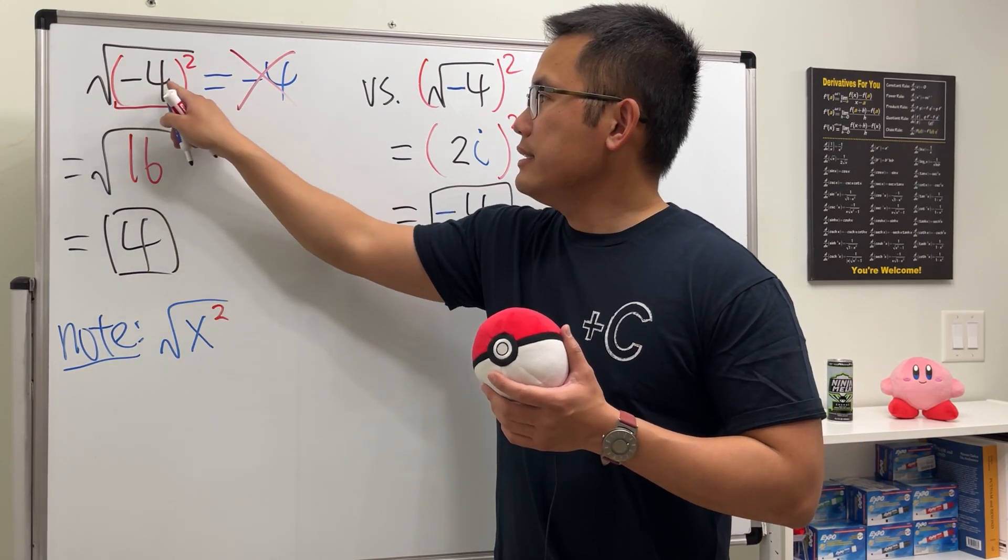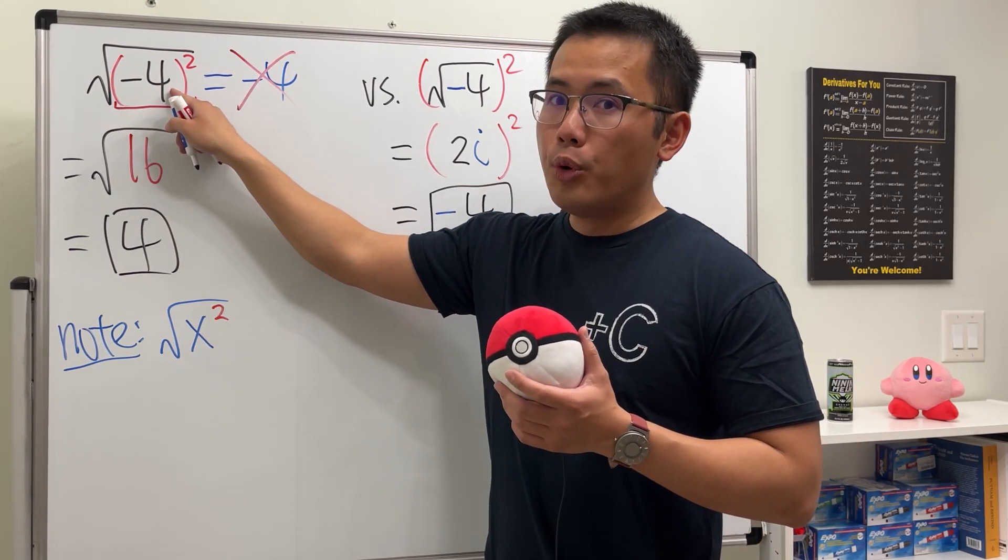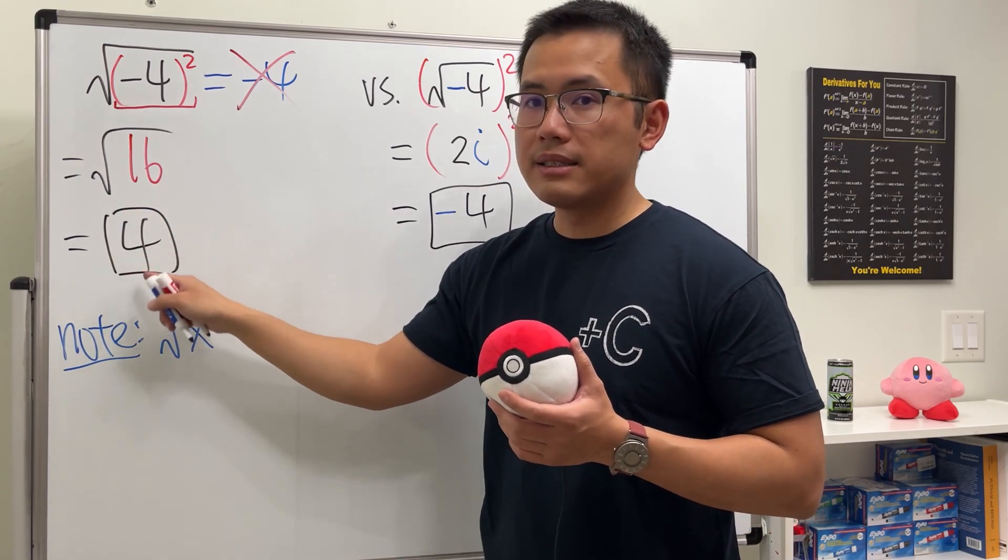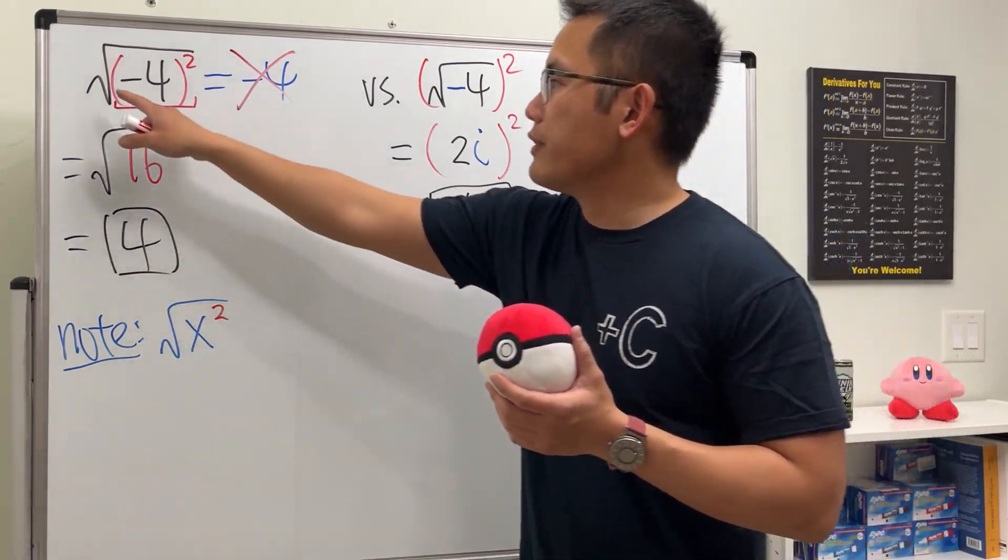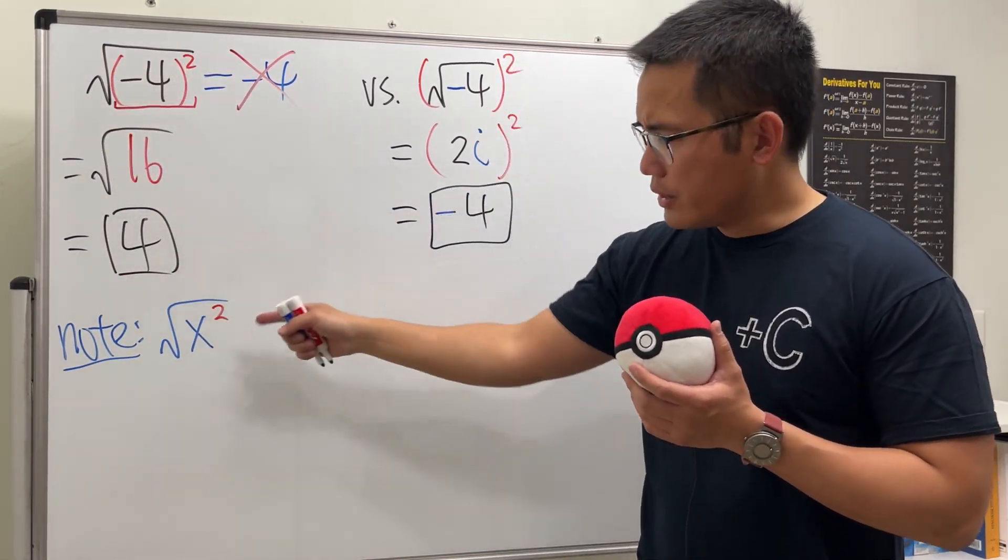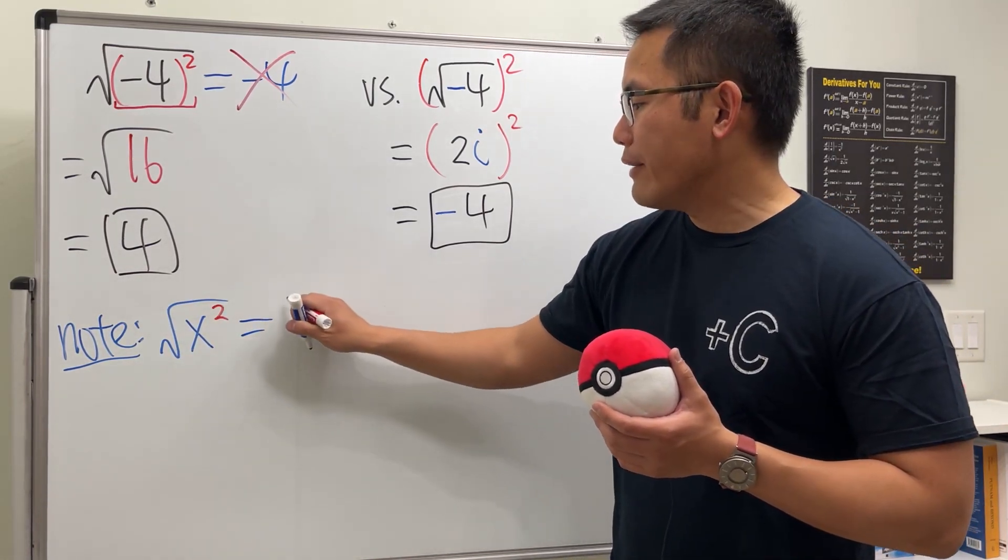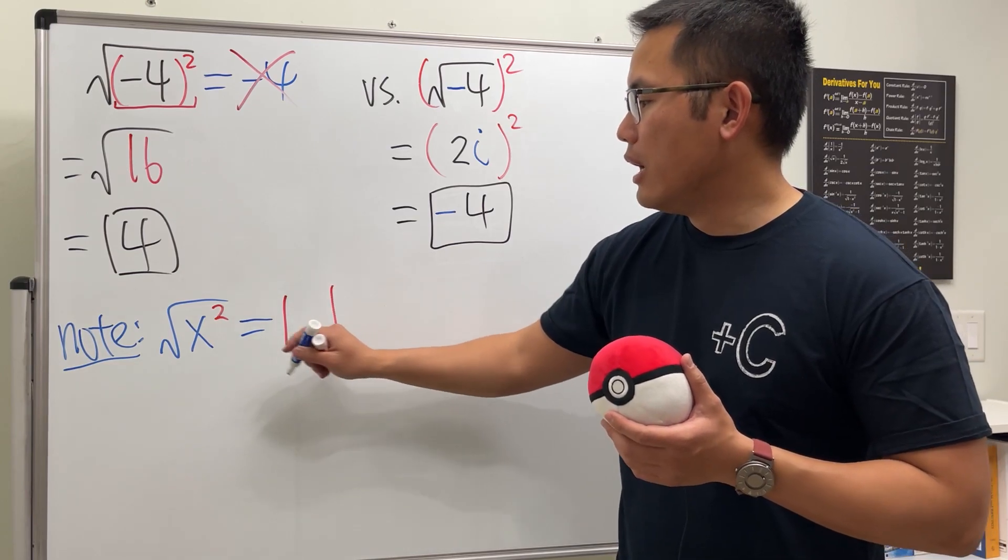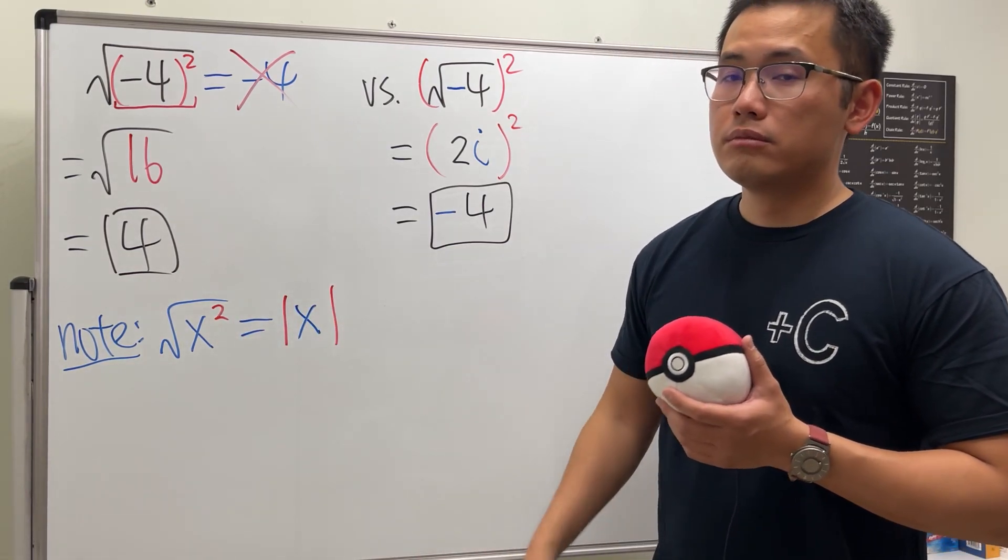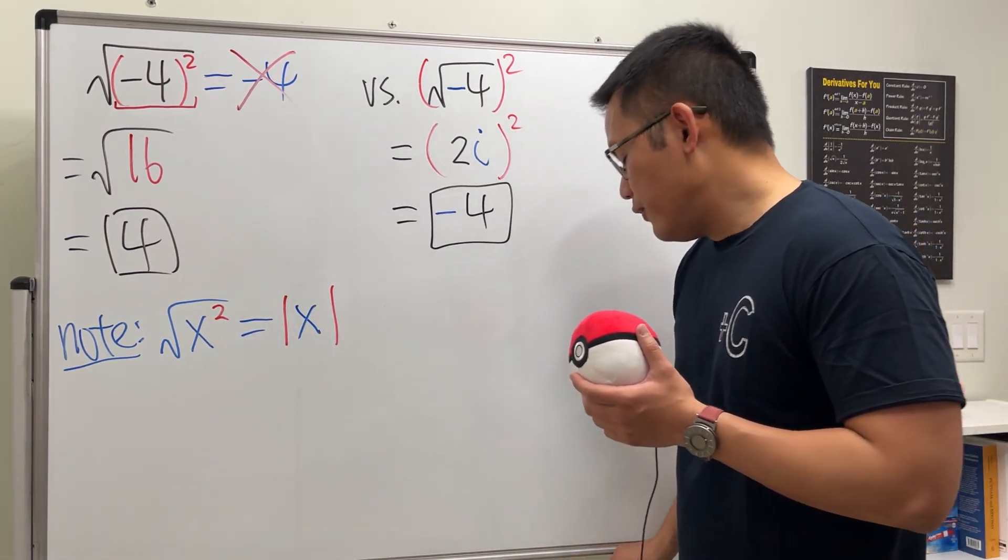Because earlier we saw this number is negative 4, but the output is actually just positive 4. The output of the square root is always positive. So for this one, you can cancel, but you will have to attach an absolute value around the x.